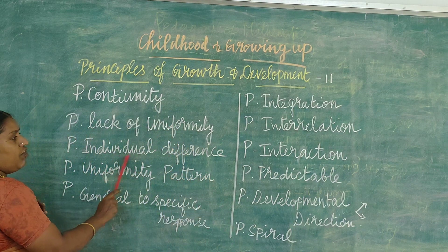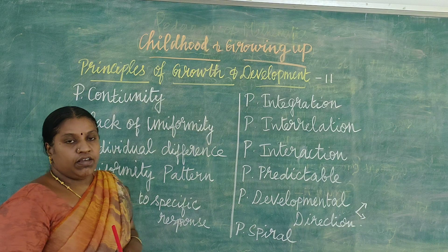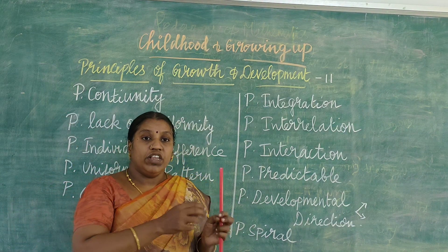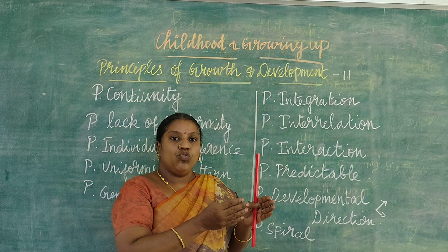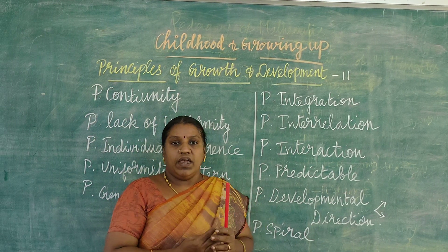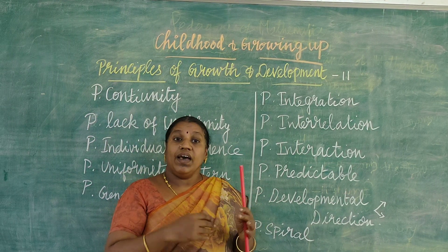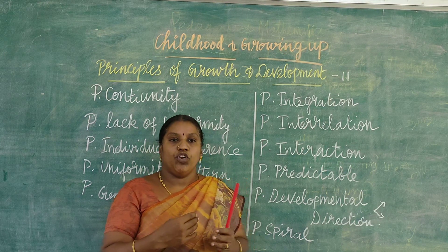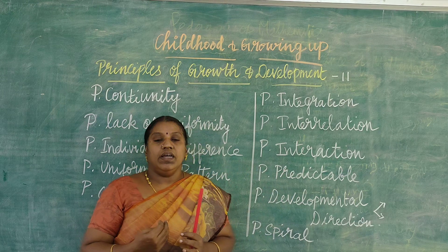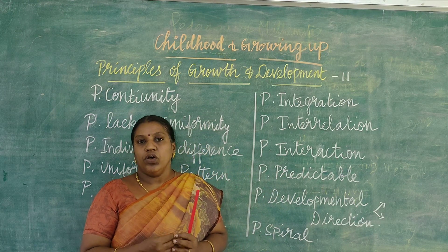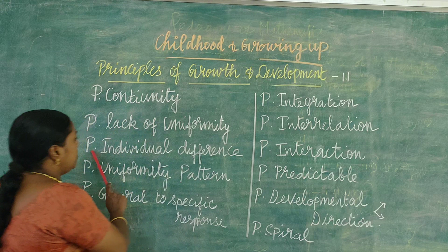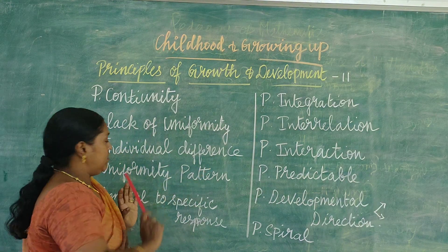Then the principle of individual differences. Even within the same family, if there are 2 or 3 children, not everybody develops at the same level. There are individual differences because, based upon your territory, the food you are provided, and your mental and physical state, these factors also determine your growth and development. That is why it is called the principle of individual differences.